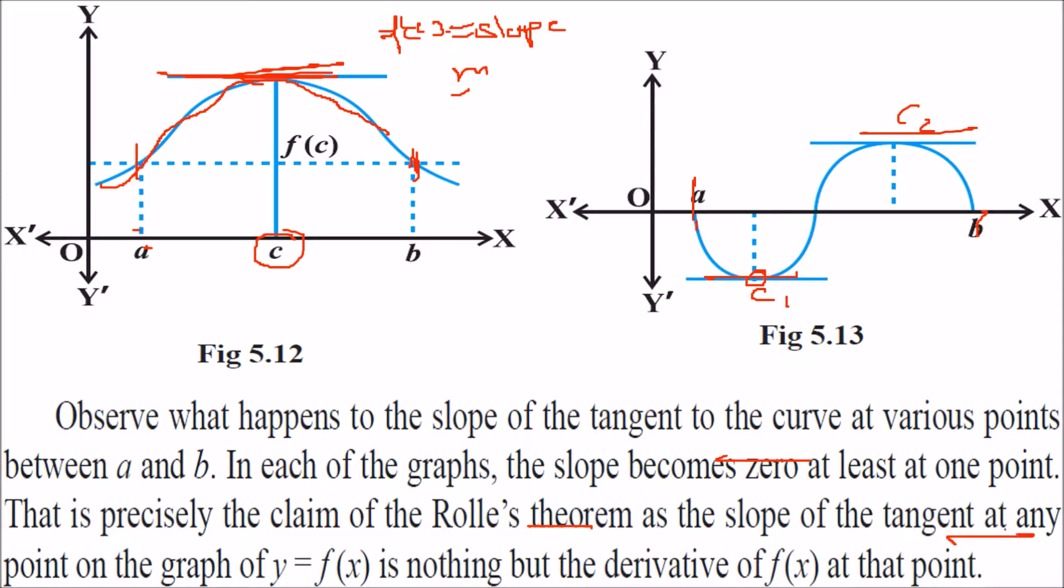This is the claim of Rolle's theorem. That is, as the slope of a tangent at any point on this graph, that is y equal to f(x). Slope is nothing but the derivative, the f dash x, the y', the dy/dx. All these are slope only if you represent it diagrammatically.